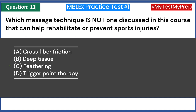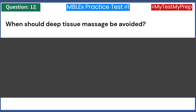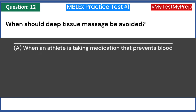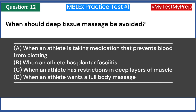Answer: C — feathering. When should deep tissue massage be avoided? A) When an athlete is taking medication that prevents blood from clotting. B) When an athlete has plantar fasciitis. C) When an athlete has restrictions in deep layers of muscle. D) When an athlete wants a full body massage. Answer: A — when an athlete is taking medication that prevents blood from clotting.